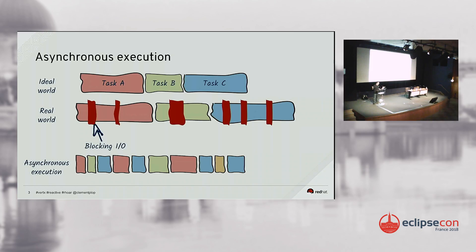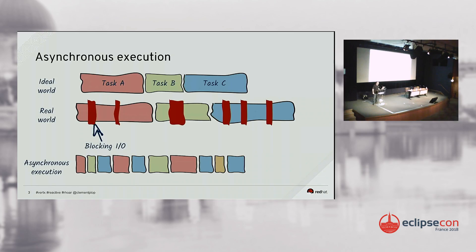The asynchronous execution model gives you another way. Instead of writing code synchronously, you write it in small chunks. When a task cannot make progress because of I/O, it uses non-blocking I/O and the same thread can make progress on another task. When the I/O response arrives, it comes back and continues execution. To handle 10,000 requests with this model, you need one thread. This is actually what we do on our Raspberry Pi.